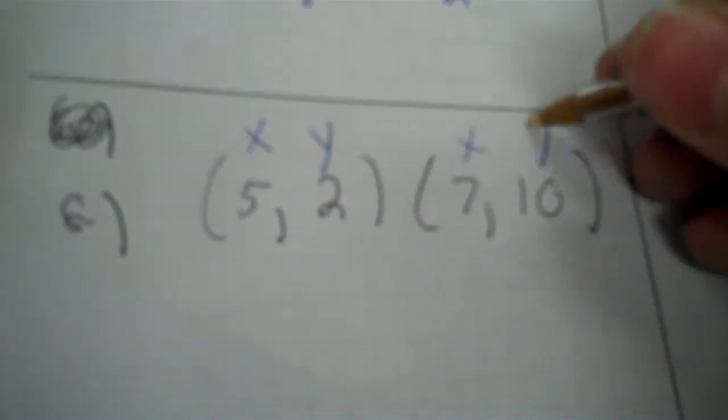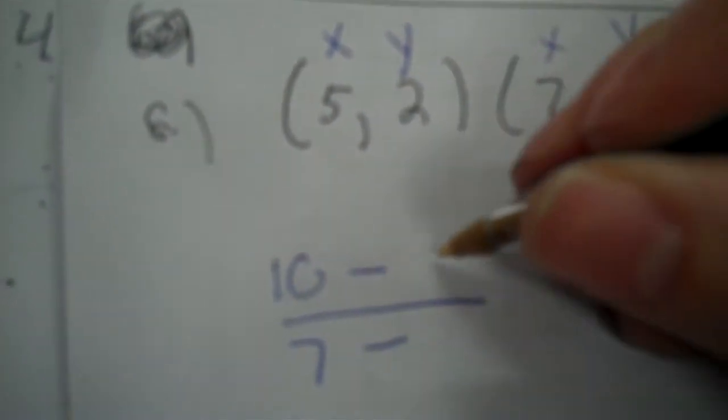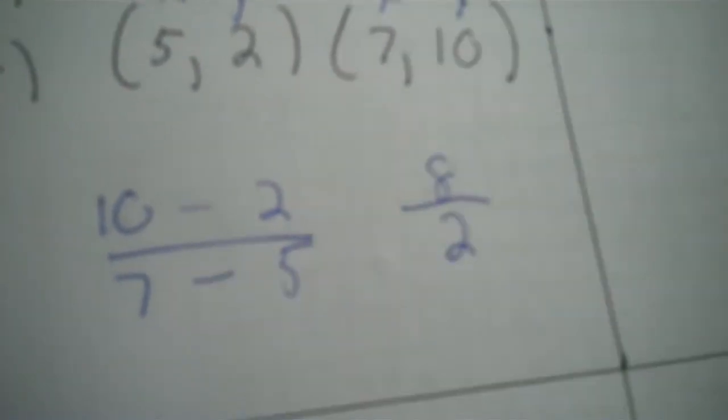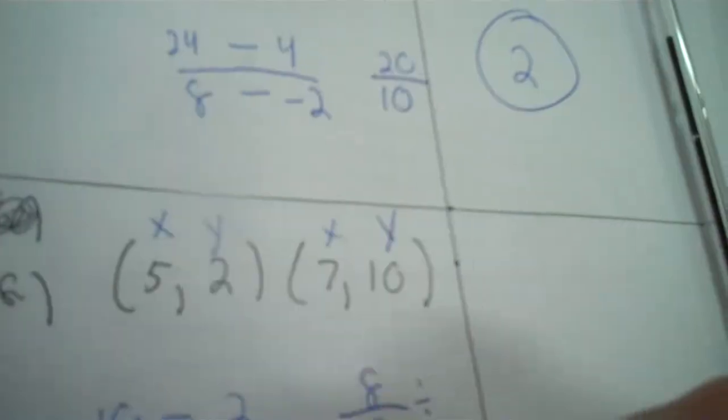Next one. X, Y, X, Y. 10 on top, 7 on bottom. After the minuses, we put 2 on top, 5 on bottom. So 10 minus 2 is 8. And then 7 minus 5 is 2. So then I take 8 divided by 2. Remember, this is division. I've got 4.